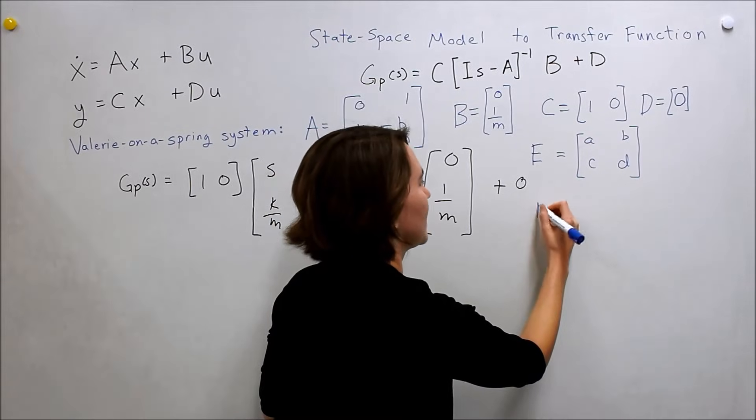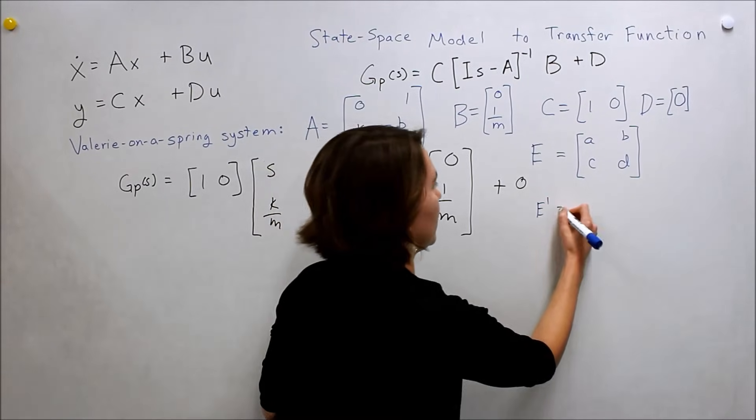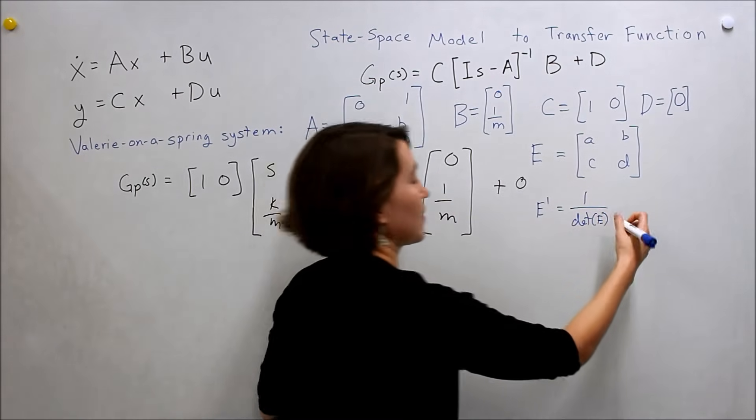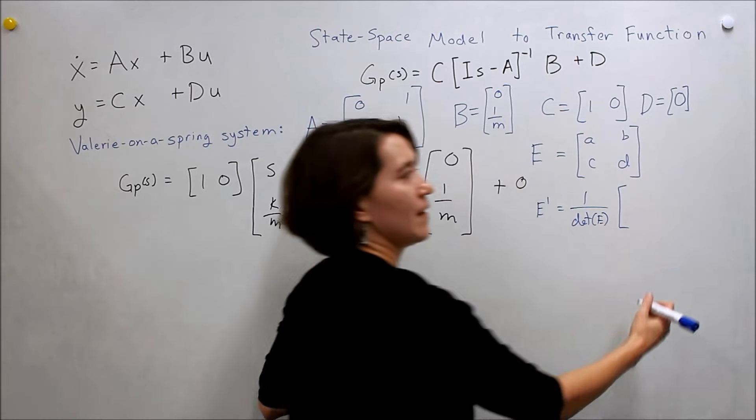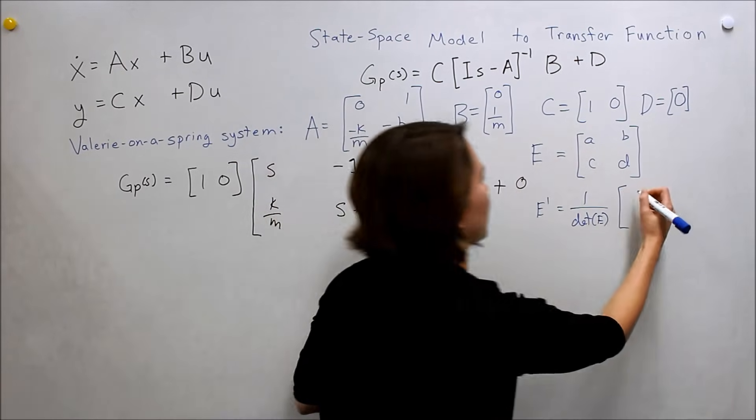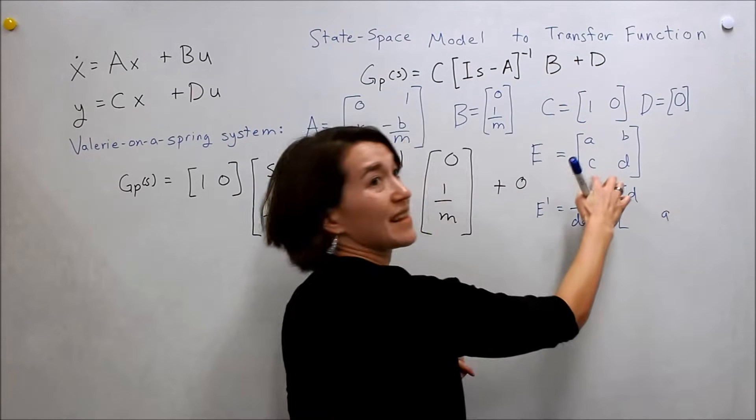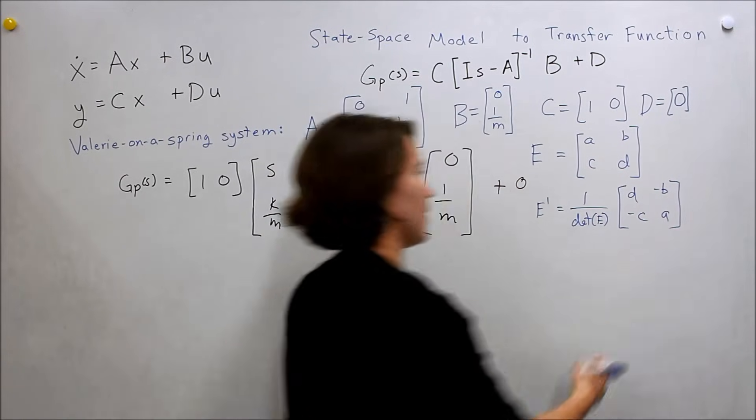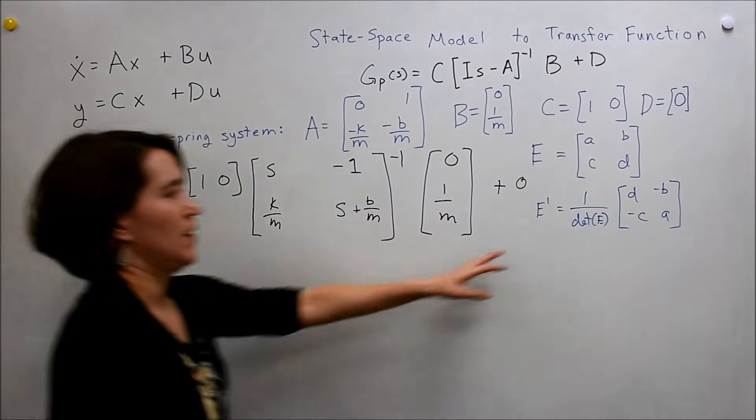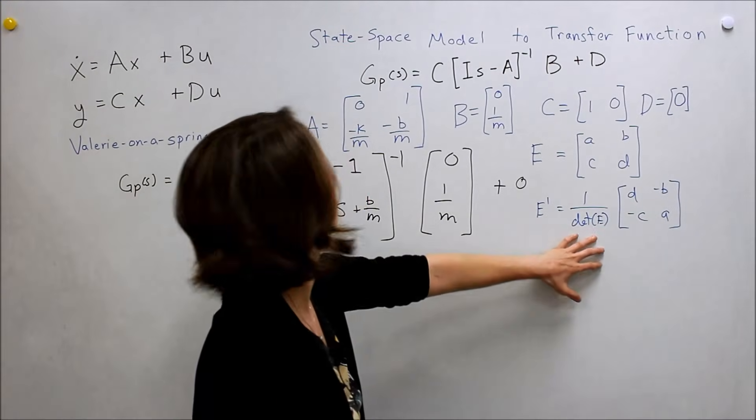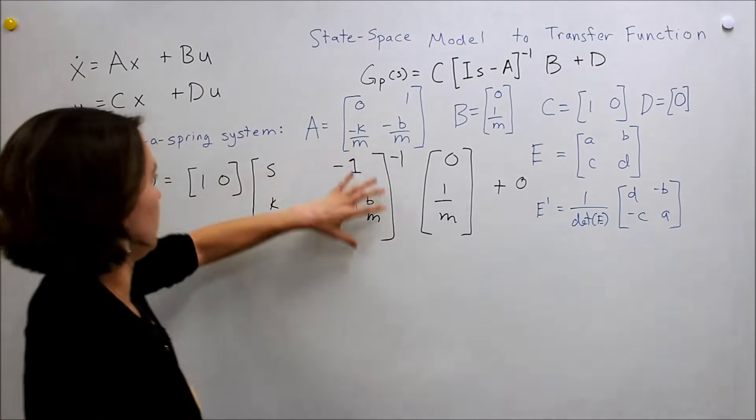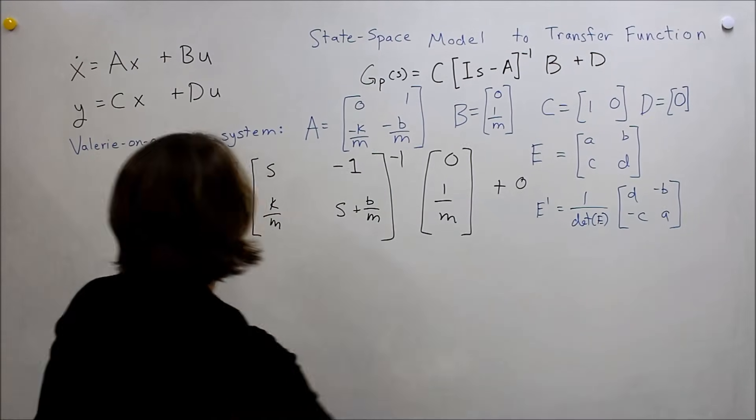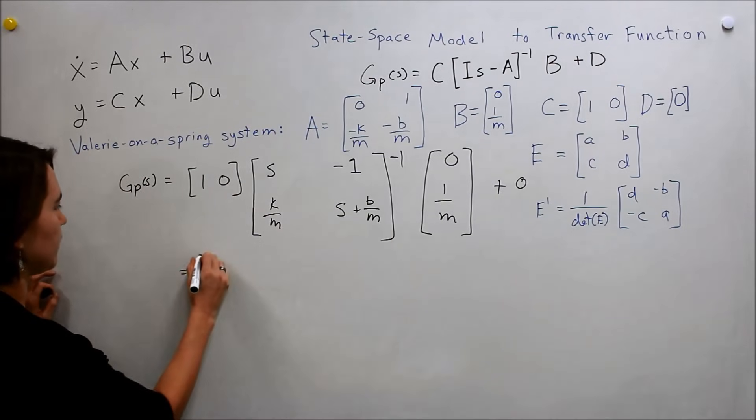then the inverse of e is going to be one over the determinant of e, the determinant of this matrix, times, and you have to flip these two. So it's d and a here, and then take the negatives of these. So negative c, negative b. So, not the most fun, but let's take the determinant of e, so the determinant of this matrix here.